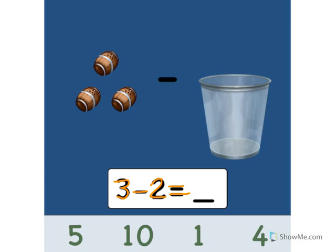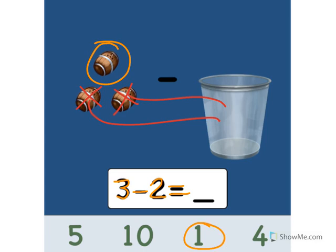Let's take away 2. 1, 2. We'll put 2 barrels in the trash can. How many barrels does that leave us with? Let's count! 1. Point to the number 1. Good. 3 minus 2 equals 1. Cool beans.